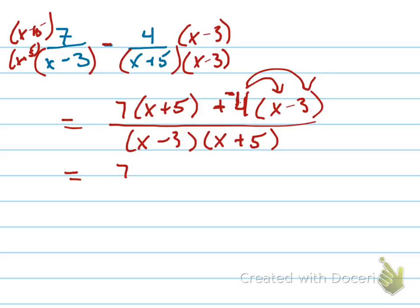So let's simplify this. That'd be 7x plus 35 minus 4x plus 12. Check that. That's where most people make mistakes. All over x minus 3, x plus 5.